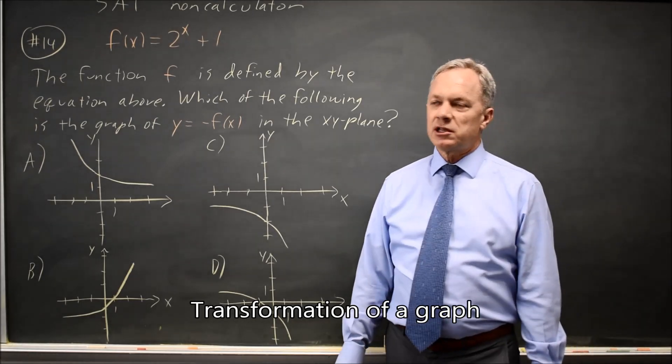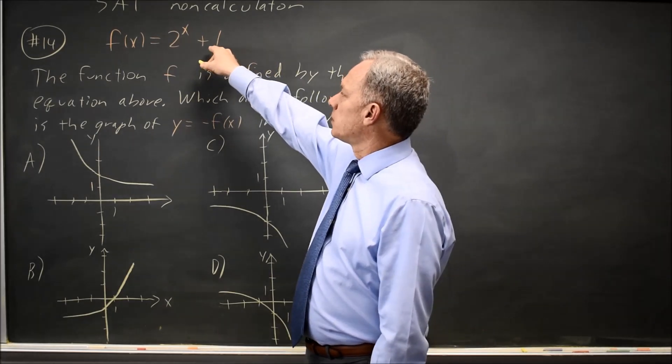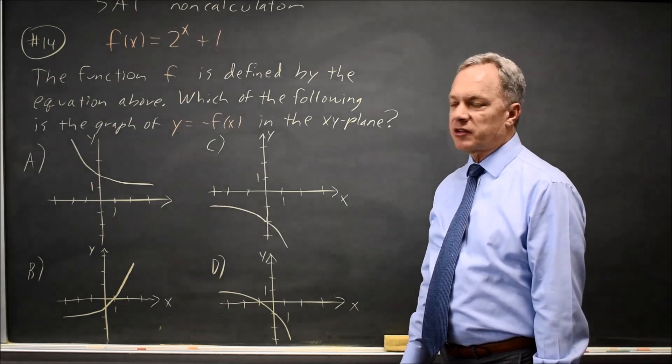This is non-calculator question number 14. College Board gives us an equation for an exponential function shifted up by 1 and asks, with f as defined, which is the graph of negative f of x.